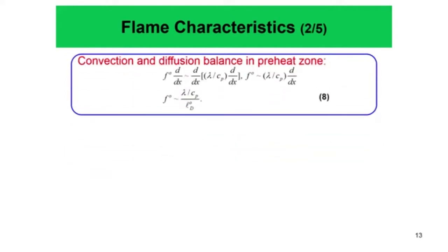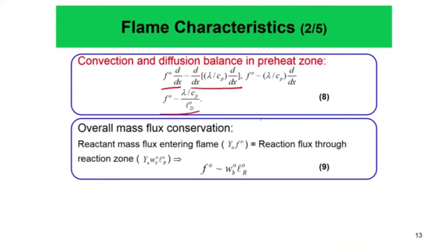We wanted to arrive at a qualitative measure of the burning flux. In the flame structure ahead of the reaction zone — in the preheat zone — there is no reaction happening, so it is essentially a balance of convection and diffusion. By balancing these two things, F_0 is nothing but λ/C_p times L_d0. Then we balance the reactant mass flux entering the flame, given by Y_u · F_0, with the reaction mass flux entering the reaction zone, given by Y_u times the reaction rate W_b0 times L_r0.